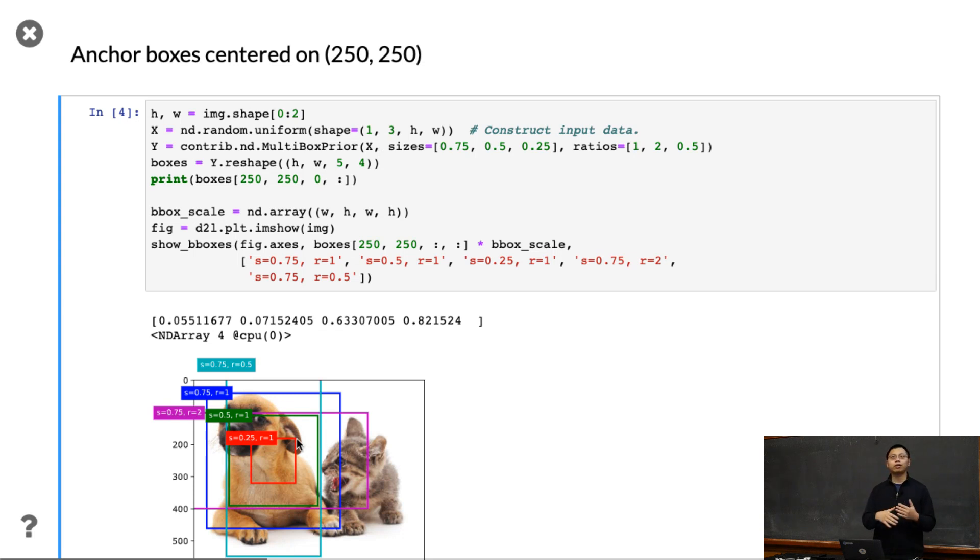So this is how to generate - you can decide what different size you're going to try, different ratios you're going to try to generate a large number of bounding boxes, anchor boxes.